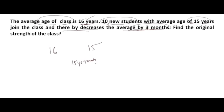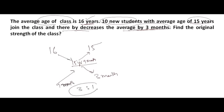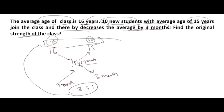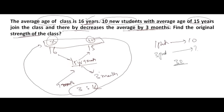We need to find the original strength of the class using the ratio. Taking differences: 16 minus 15 years 9 months gives 3 months, and 15 years 9 months minus 15 years gives 9 months. The ratio is 9 to 3, which simplifies to 3 to 1. One part corresponds to the 10 new students, and 3 parts corresponds to the original class. So the original strength is 30. If asked for total strength now, it would be 40.